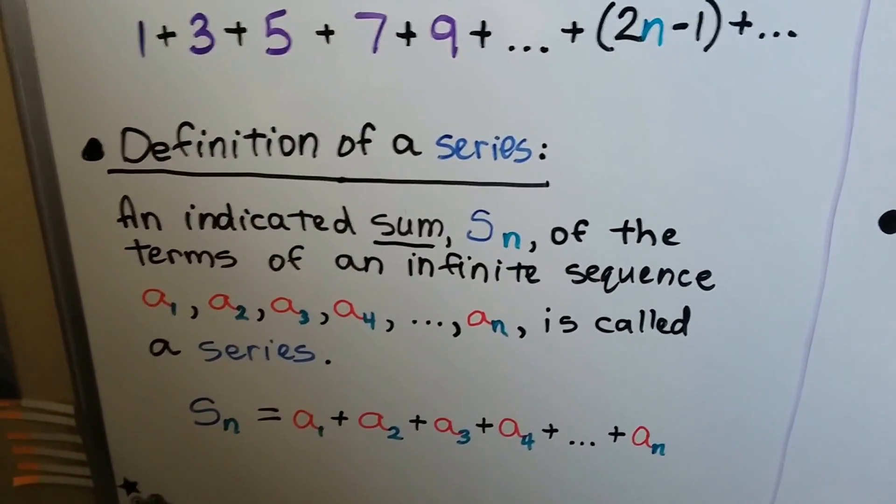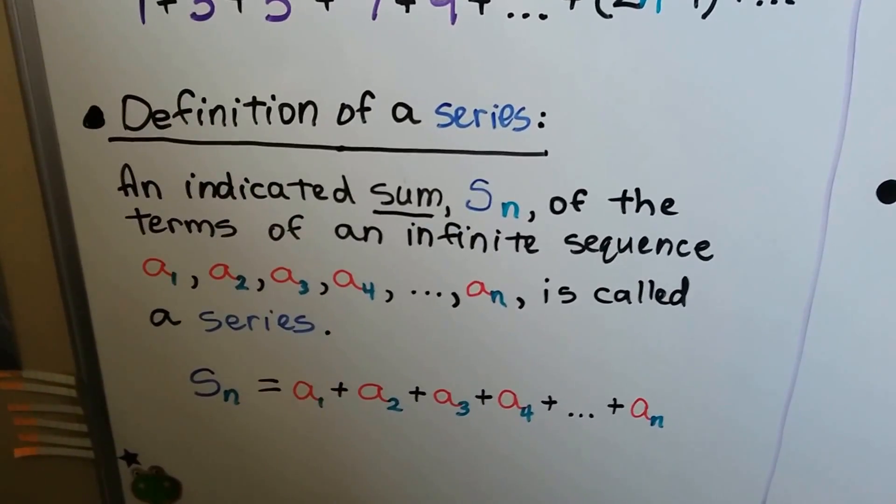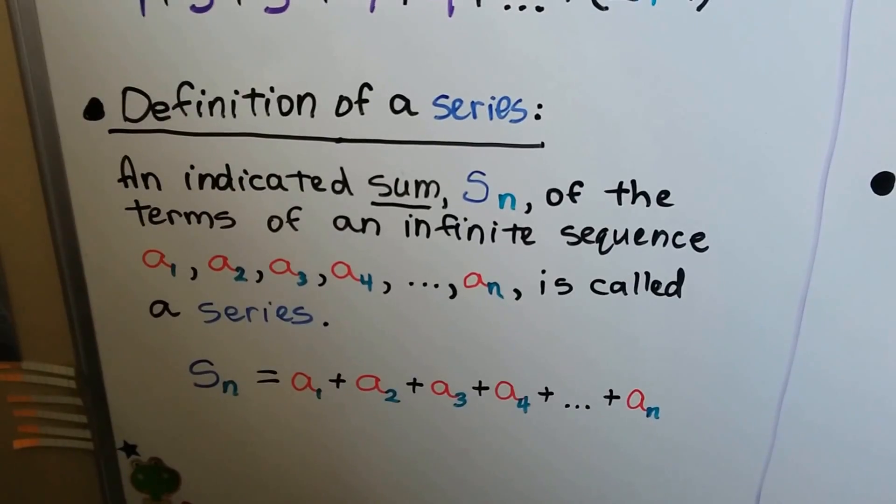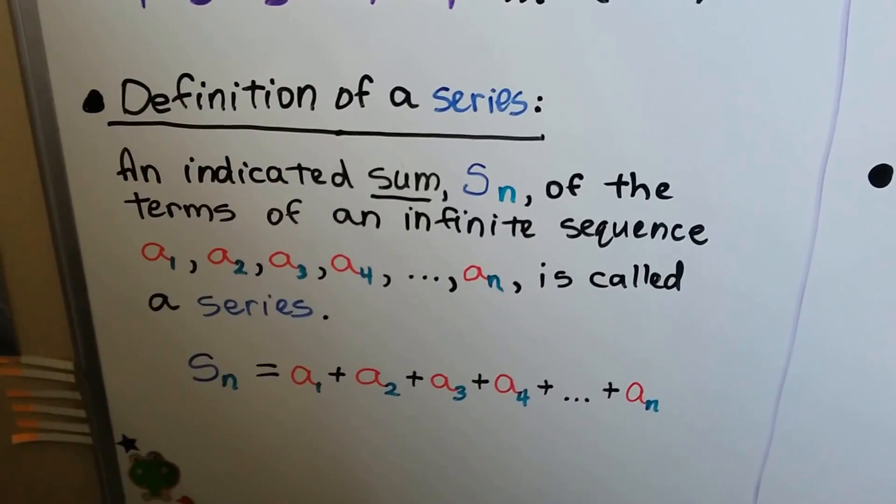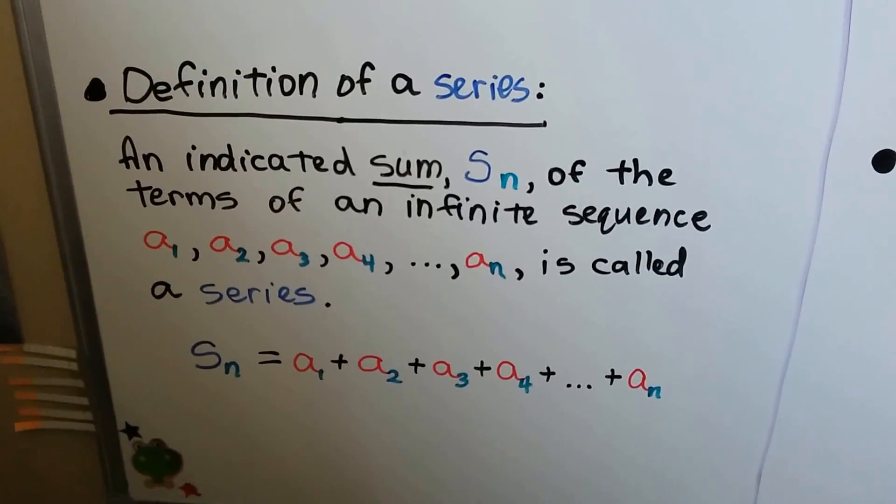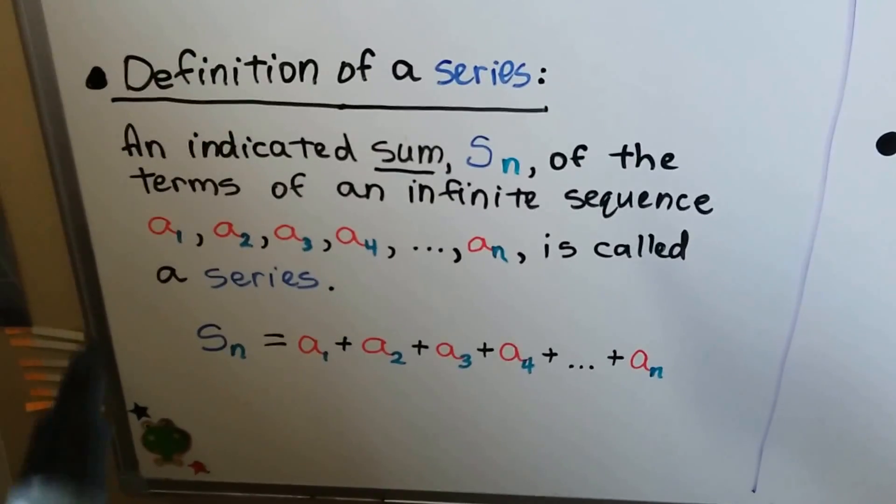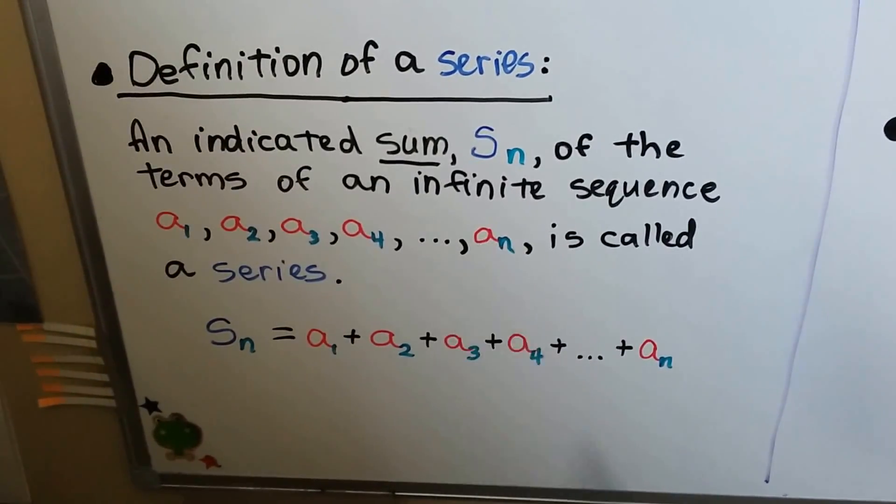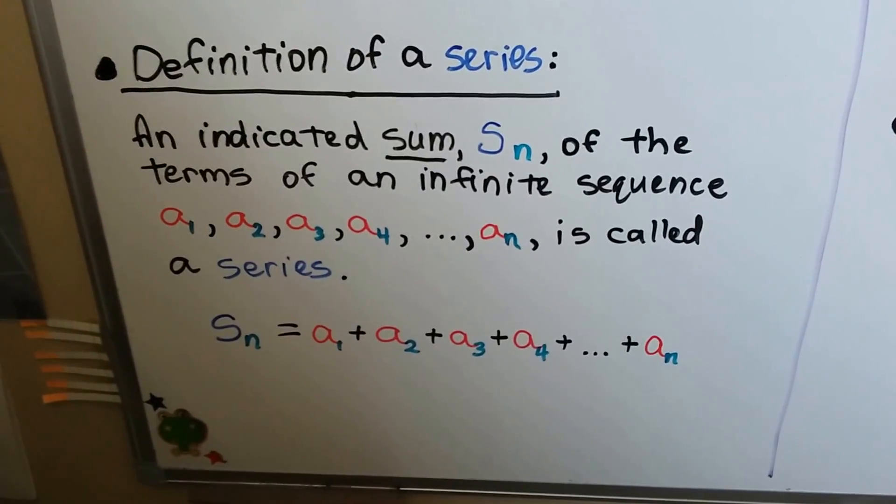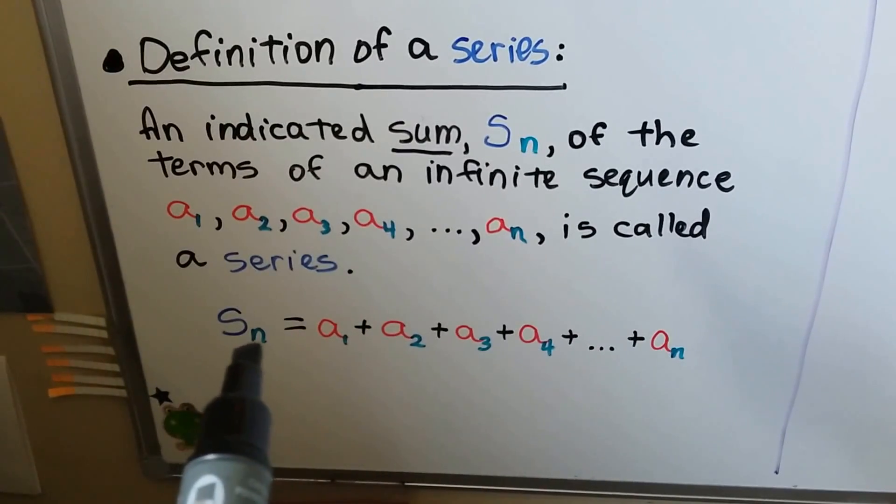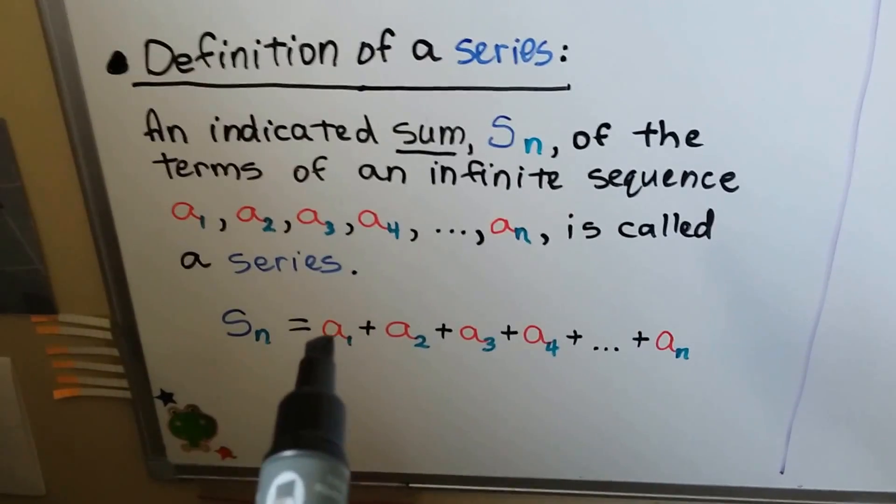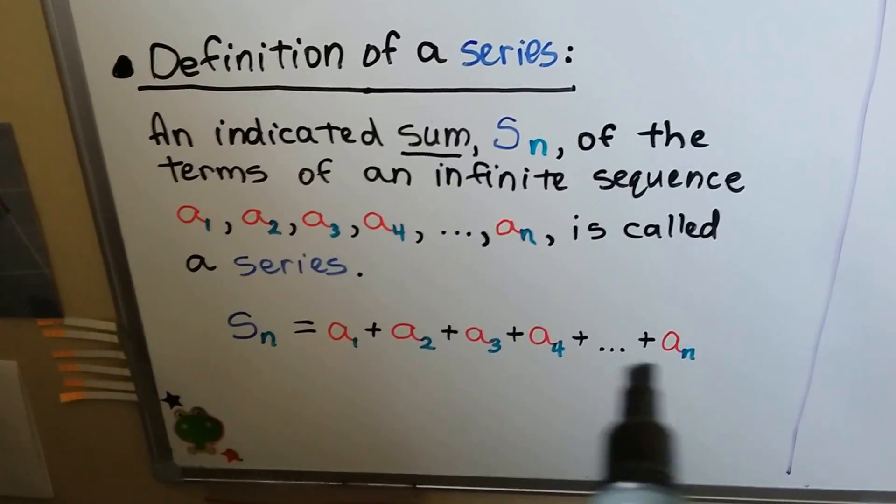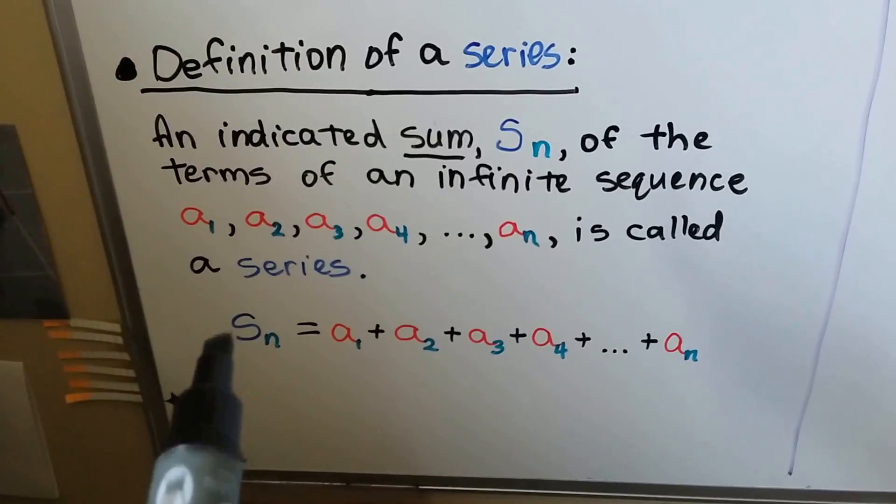This is the formal definition of a series. It's an indicated sum, S_n, of the terms of an infinite sequence. We have a_1, a_2, a_3, a_4, ..., a_n. That's called a series. We would write S with a subscript n, and it equals these when they're added together. We get a sum.